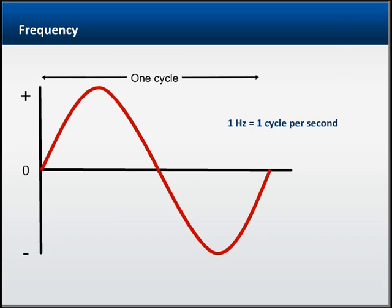In an AC system, frequency is the rate at which the electron flow changes direction. Frequency is measured in Hertz, abbreviated as Hz, and 1 Hertz is defined as 1 cycle per second.